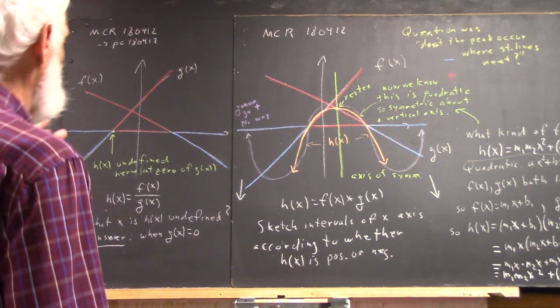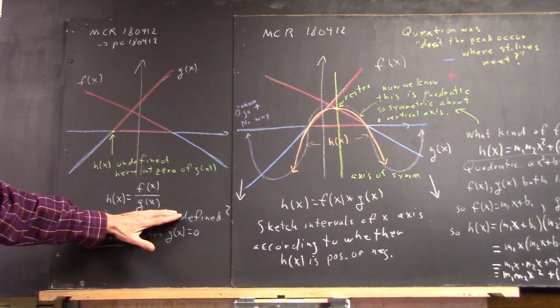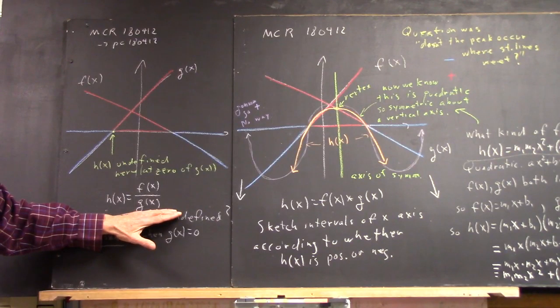Okay, so again, same graph. h of x equals f of x over g of x, right?